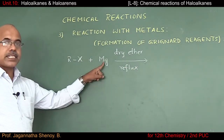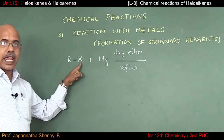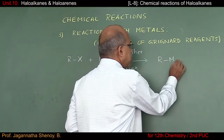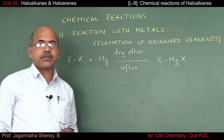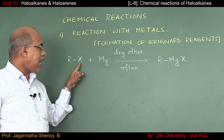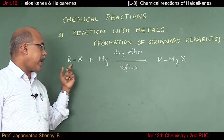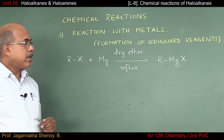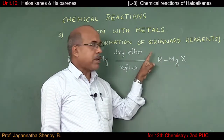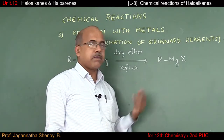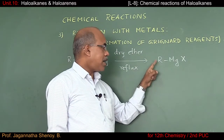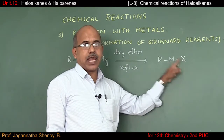Magnesium gets inserted in between R and X, and what we get is RMgX. This reaction not only takes place with alkyl halide but also with aryl halide. In other words, in this product R can be an alkyl group or an aryl group. In short, these products are organomagnesium halides.